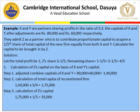Step 2 — calculation of total capital of reconstituted firm: Rs. 1,40,000 × reciprocal of 4/5 = Rs. 1,40,000 × 5/4 = Rs. 1,75,000. Step 3 — Z's capital = Rs. 1,75,000 × 1/5 = Rs. 35,000. So the capital to be brought in by incoming partner Z is Rs. 35,000, calculated on the basis of old partners' adjusted capitals.